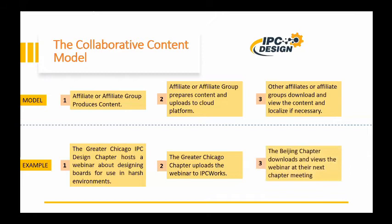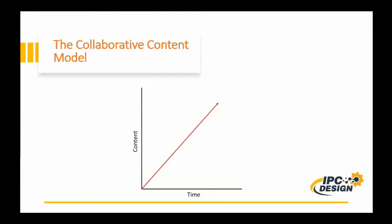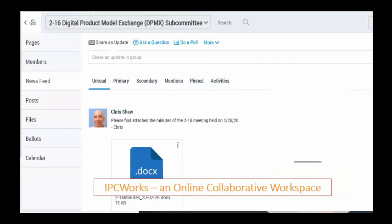To round off our example, the Beijing Chapter downloads the harsh environments webinar. To help their chapter members in their region, one of the bilingual chapter members translates the transcript into Mandarin. As time goes on, the amount of educational content available for an affiliate increases as a function of input from all other affiliates. And of course, IPC will be adding to the resource pool as the program continues as well.